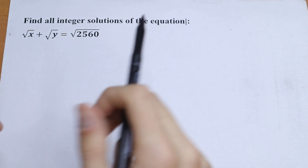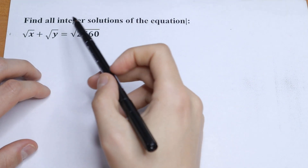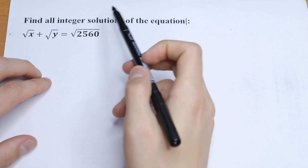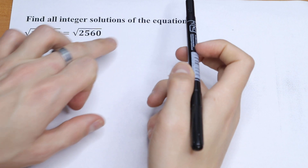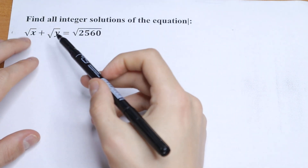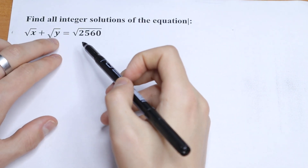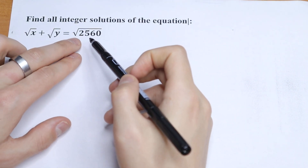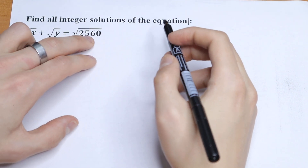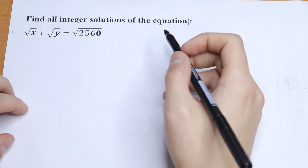Hello everyone, welcome back to MathMood. Today we have an interesting algebra problem. We need to find all integer solutions of the equation: square root of x plus square root of y equals square root of 2560.